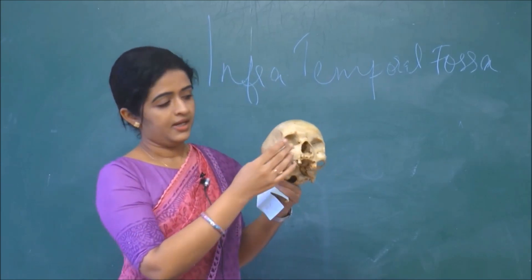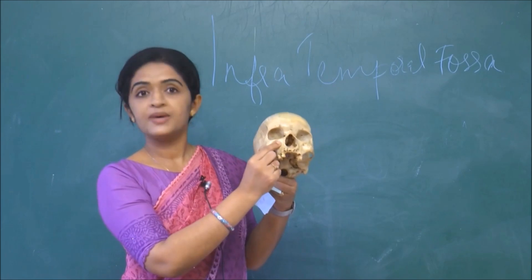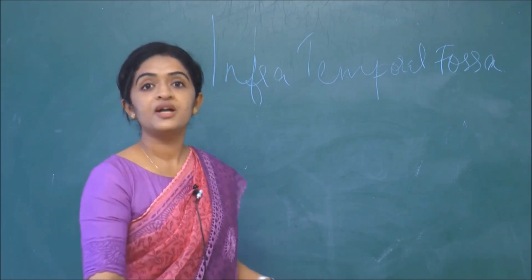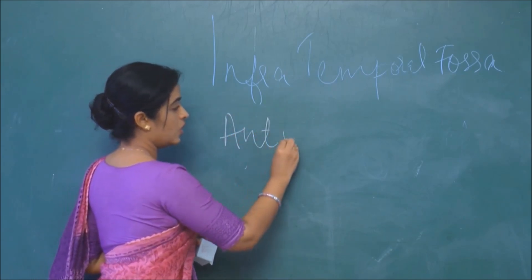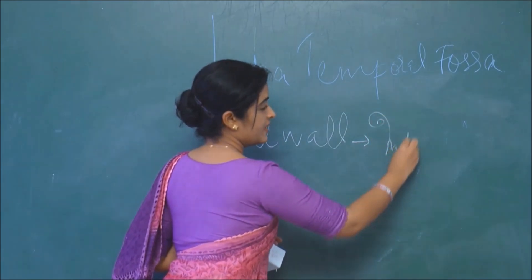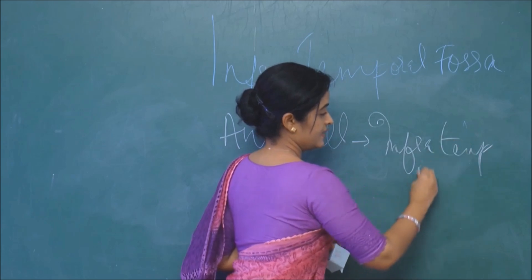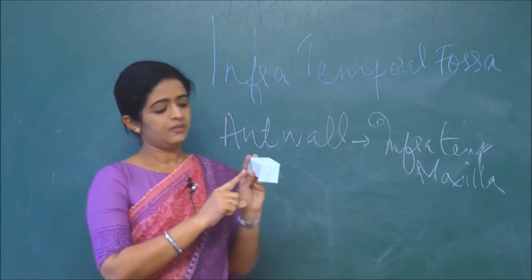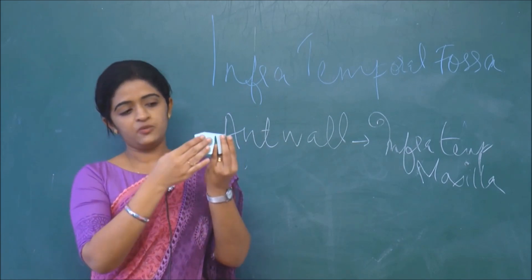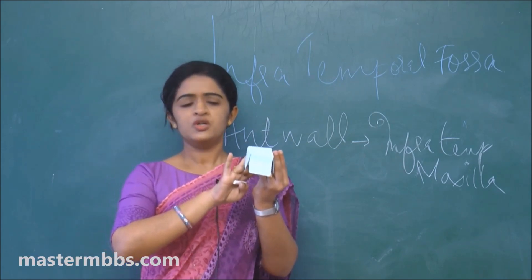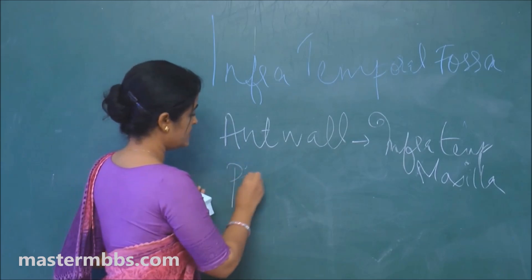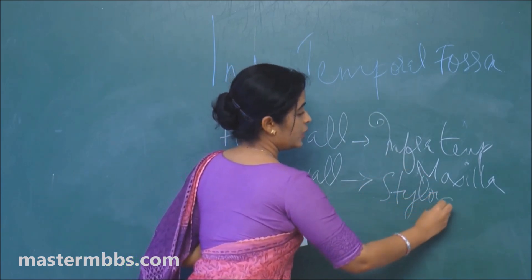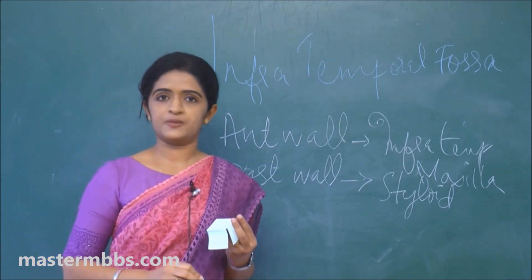The anterior wall is formed by the infratemporal surface of the maxilla - the part of the maxilla facing into the infratemporal fossa. The posterior wall is mainly formed by the styloid process, which projects into the posterior wall of the infratemporal fossa.